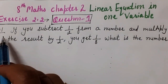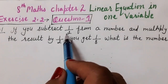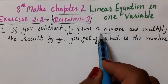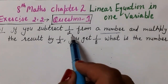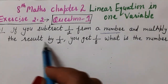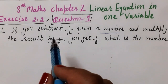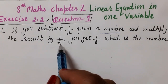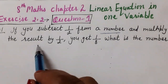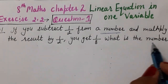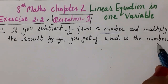The question is: if you subtract 1/2 from a number — अगर आप किसी number में से 1/2 subtract करते हो — and multiply the result by 1/2, you get 1/8. What is the number? तो वो number क्या है?